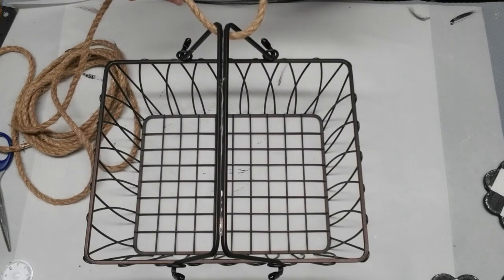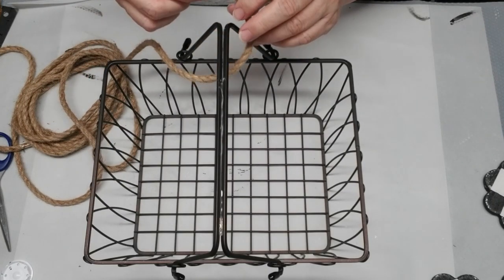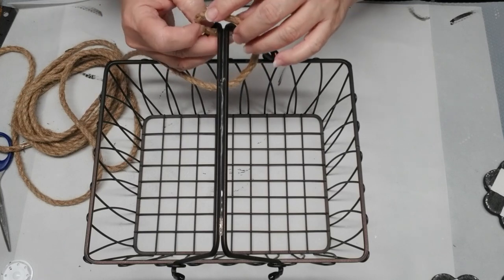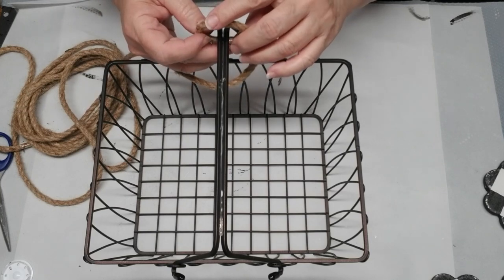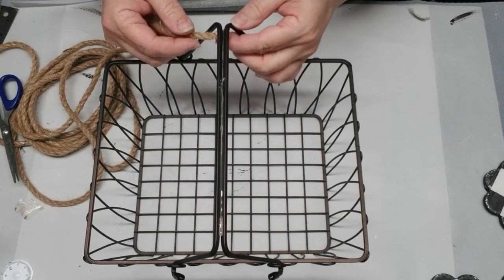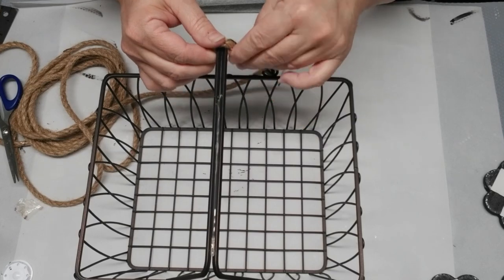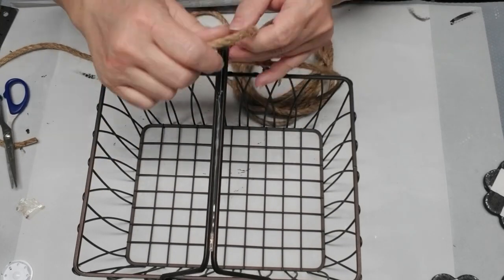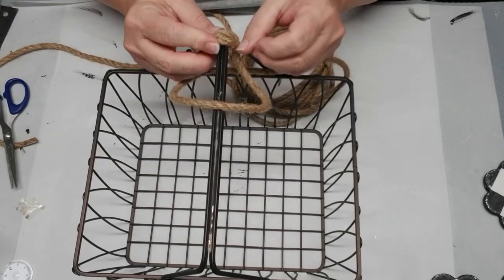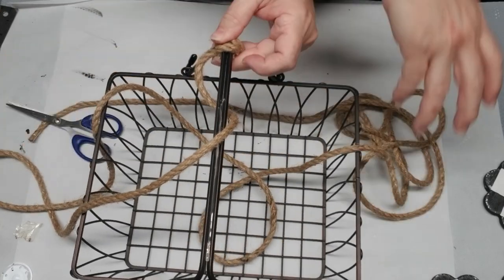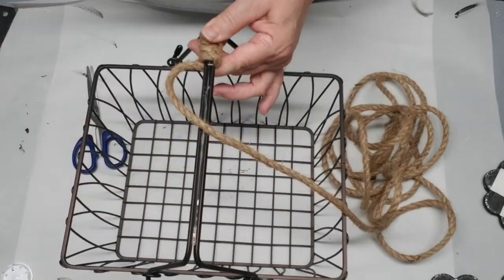Starting at one end, I'm going to make sure that the cut end is at the bottom, and then I'm just going to use hot glue to hold it in place and start wrapping the rope all the way along until I get to the other end. Super simple, super easy, but it turns out really cute. I use some hot glue to secure it about every three or four loops.